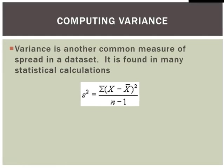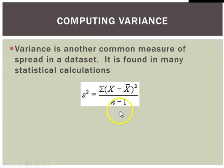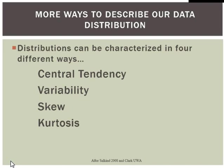Standard deviation is the most common metric we'll use to describe variability in our data set, but actually it's the variance that's much more commonly used within statistical formulas. This should look very familiar: to calculate variance, we take every observation, subtract the mean, square it, sum all those up, and divide by n minus 1. The only thing missing is the square root sign. It's literally that simple — variance is just the standard deviation squared.